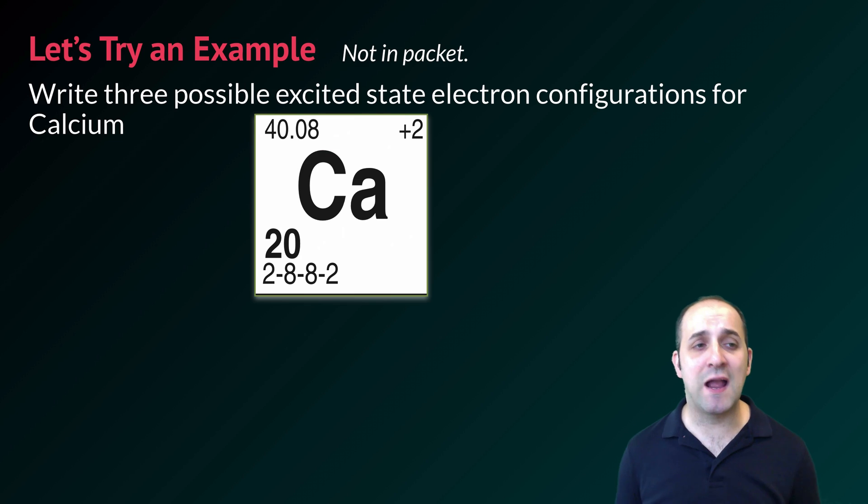Let's try an example. This is not in your packet. So here we have calcium and what I want you to do is write down three possible excited state electron configurations for calcium. Pause the video, take a moment and do it on your own, and then when you're ready, let's go through it together.